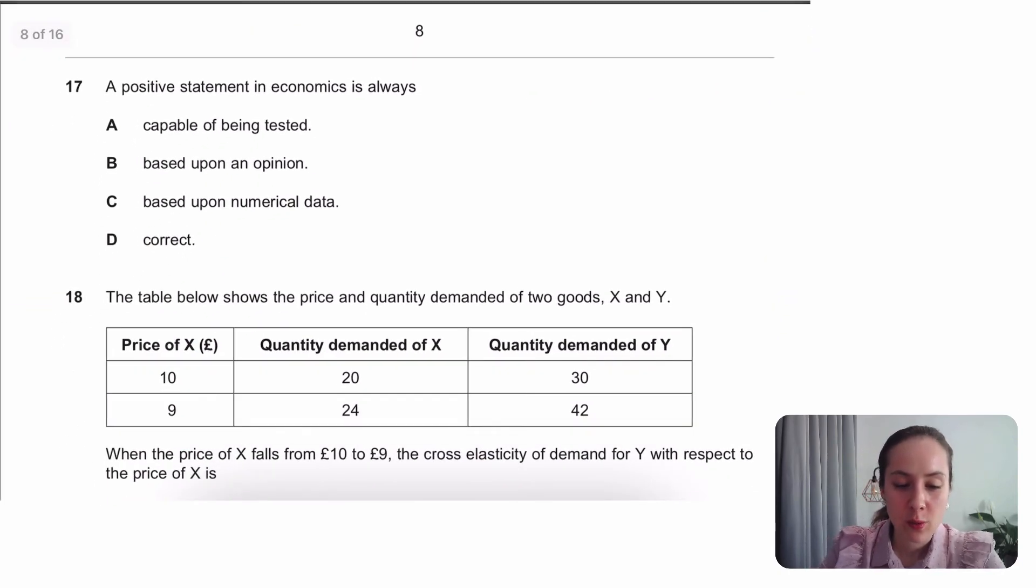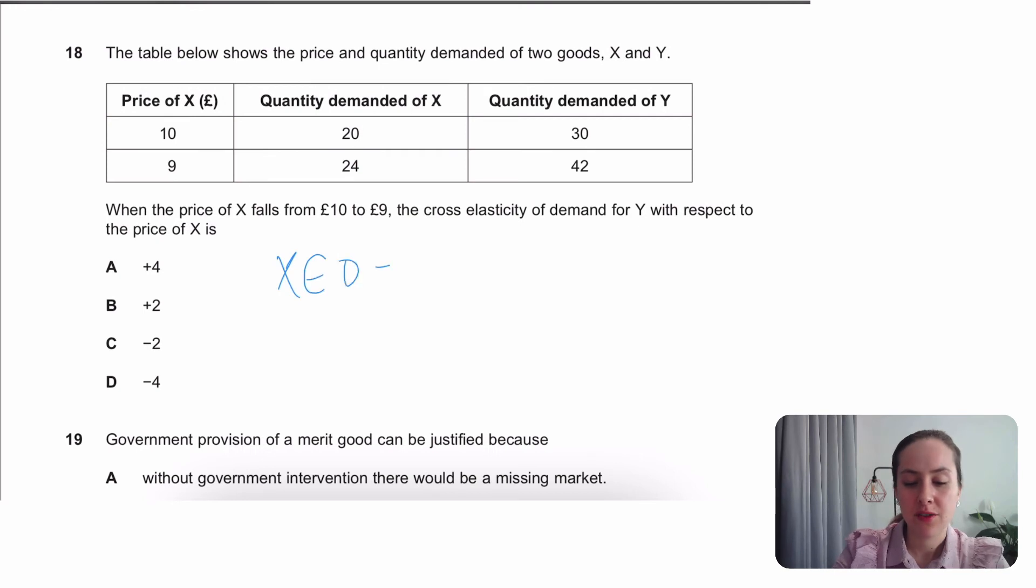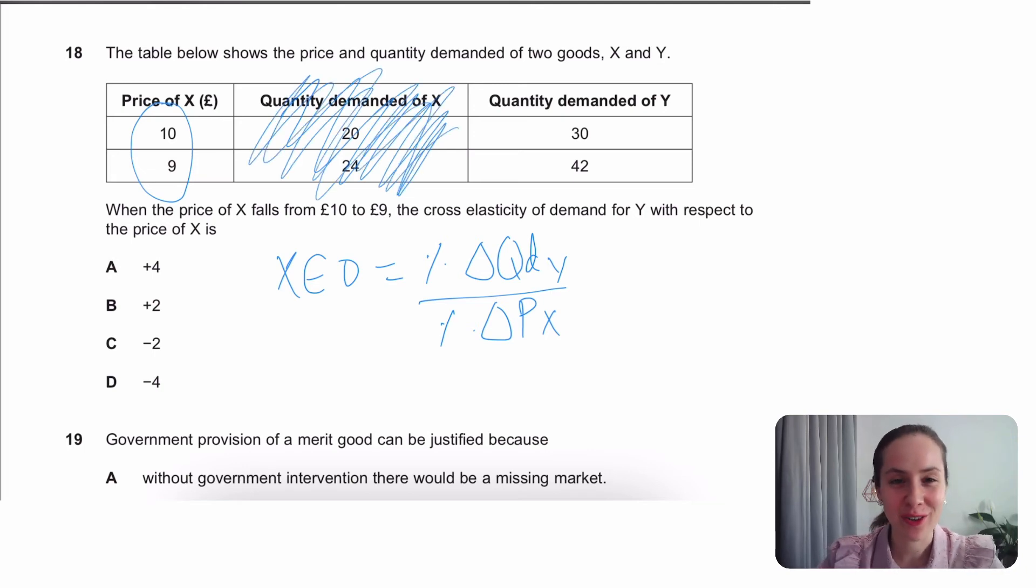Positive statement in economics is always something that's testable. Just that's the best way to learn it. So here we've got XED. It's just the same as PED. You just have to use different goods. So this is good A and good B. It doesn't matter which way around. They'll usually tell you. Here they've got X and Y and we're told that the price of X is changing. So look how nice they are. They tell us that the price of X is the one changing. And we're looking at the XED. So it should be the quantity demanded of Y. So I'm going to ignore this one. That's just throwing us off. And when the price of X falls from 10 to 9, let's work out the percentage change in the price of X.